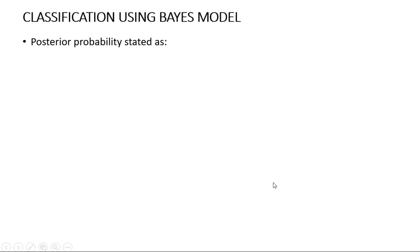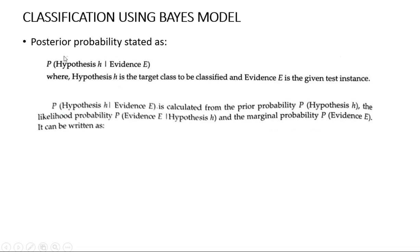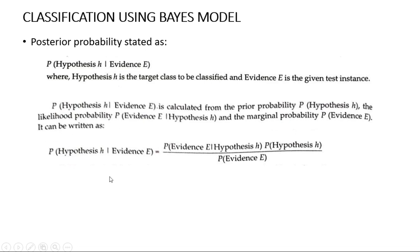Coming to classification using the Bayes model, the posterior probability can be stated as: the probability of hypothesis H given evidence E equals the likelihood probability — P(E|H) — multiplied by the prior probability P(H), divided by the total probability P(E). This is the Bayes theorem equation for representing posterior probability.